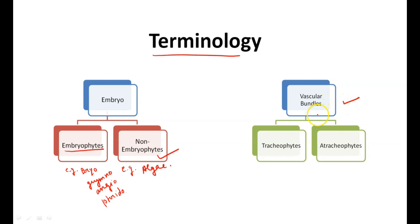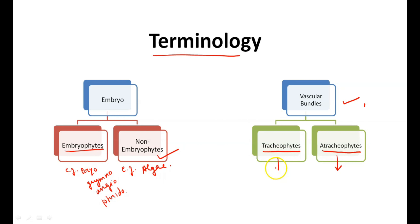If we talk about vascular bundles, these were not present from the very start in plants, because when plants evolved they evolved in water and there was no need for vascular bundles, and the size of the plant was very small. When plants needed vascular bundles, they developed them. Until the atracheophtyes stage, no vascular system is present. After atracheophtyes, the plants became tracheophytes, in which vascular bundles are present. Examples of atracheophtyes are algae and bryophytes, and examples of tracheophytes are pteridophytes.